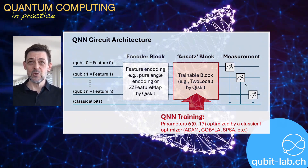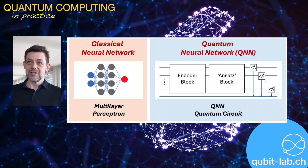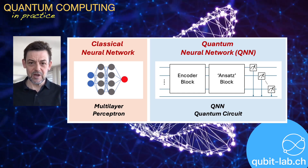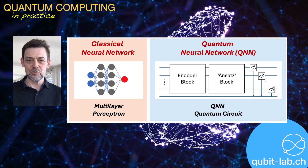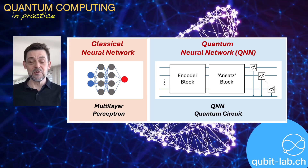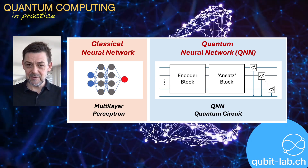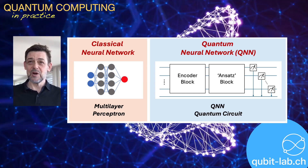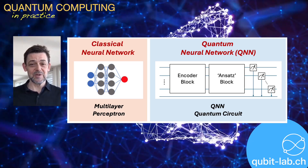In short, a classical multilayer perceptron propagates information through layers of weighted sums and non-linear activations, while a QNN layer is a quantum circuit where information is encoded as quantum states and processed through parameterized and optimized rotations and entangling gates. The training loop in a QNN is hybrid: classical software iteratively updates the quantum circuit parameters based on measurement outcomes, rather than relying entirely on classical backpropagation.